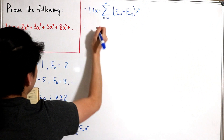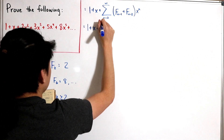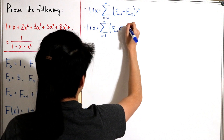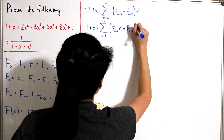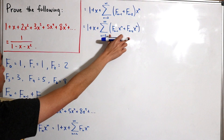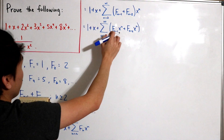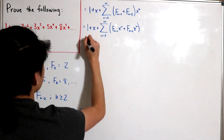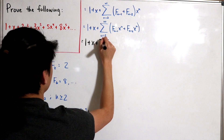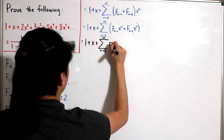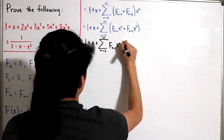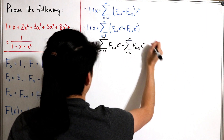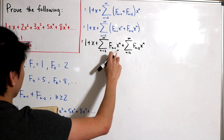Distributing, we get 1 + x plus the infinite sum from n = 2 of F(n−1)·x^n, plus the infinite sum from n = 2 of F(n−2)·x^n. We then factor out x from the first sum and x² from the second sum, which is where the interesting part begins.